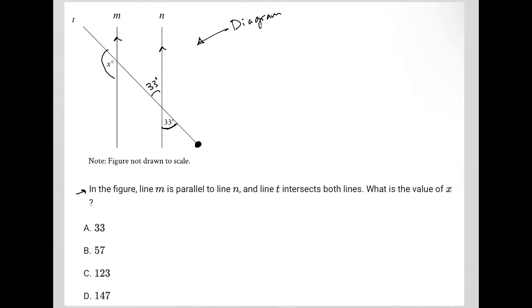I'd also know that this angle here is 147 degrees because we want this entire angle to be a straight angle, which is 180 degrees. 33 plus 147 is 180. Remember that the angle for a straight line is 180 degrees.